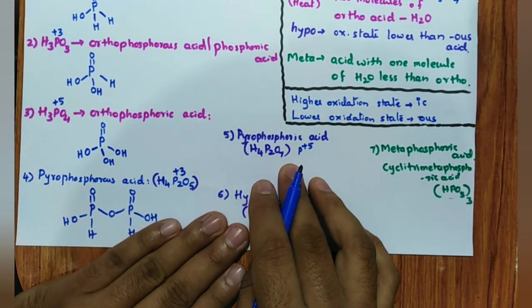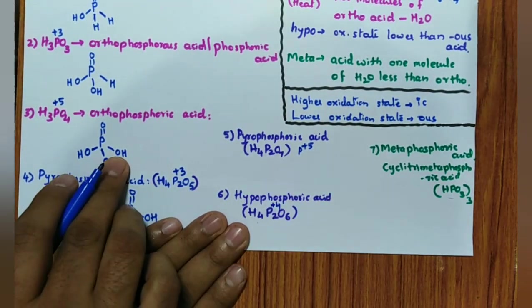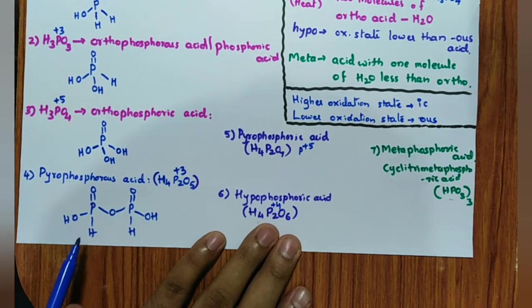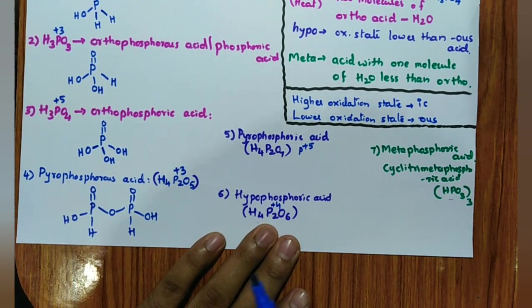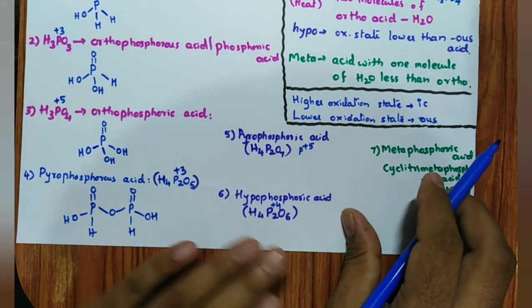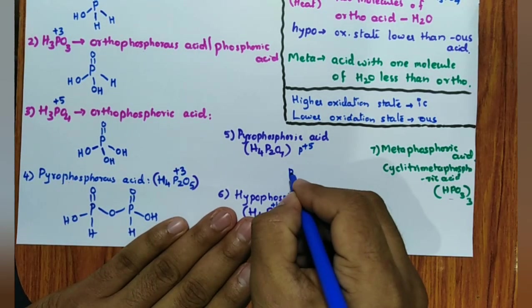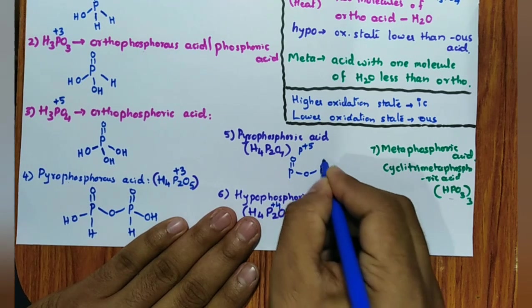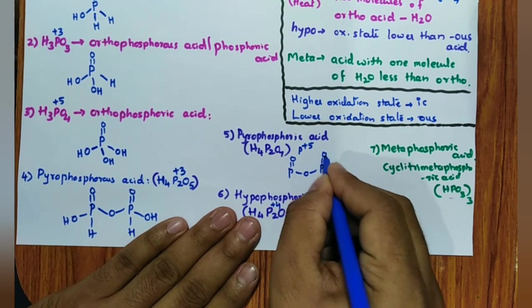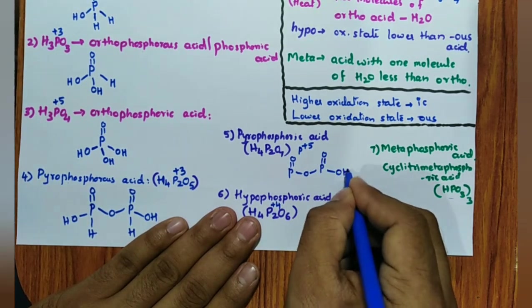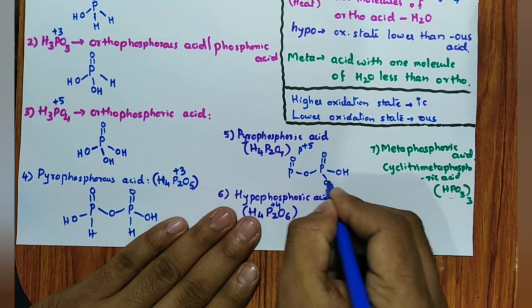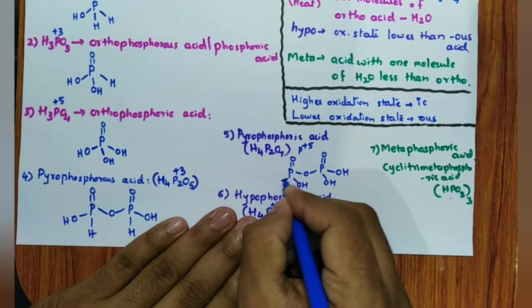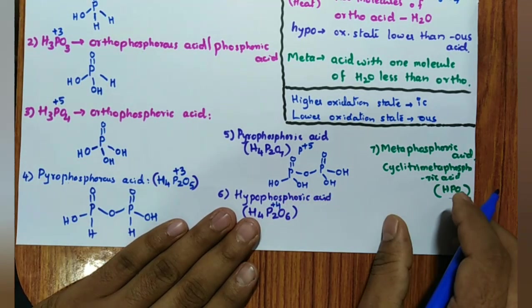Pyrophosphoric acid: similarly drawn, the only difference from pyrophosphorous acid is that where there was an H, you now write O–H. So the structure is: P=O, oxygen bridge, P=O, with O–H, O–H, O–H, and O–H — four hydroxyl groups total. Very simple.